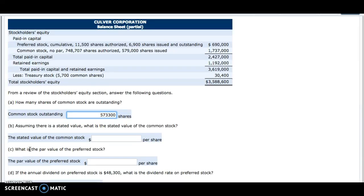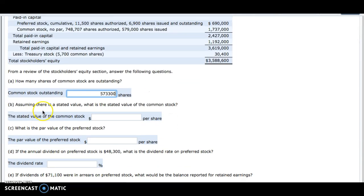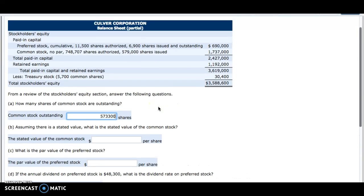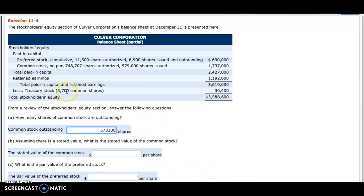The next question says, assuming there is a stated value, what is the stated value of the common stock? So again, we'll look at our common stock here. We have 579,000 shares issued. There is no paid-in capital in excess of stated value account on here, so we can assume that all of these shares were sold for their stated value.